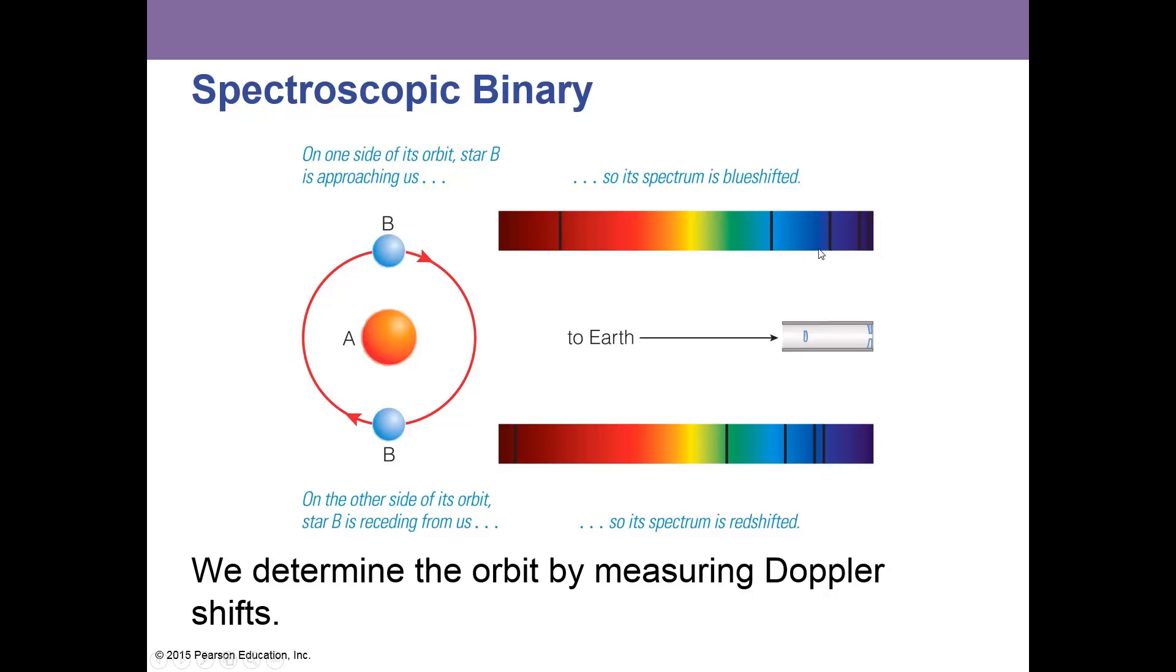When a star is moving away from us, these lines move towards the red side, called redshifted. When the star is moving towards us, the lines move towards the blue side, and that's called a blueshift.